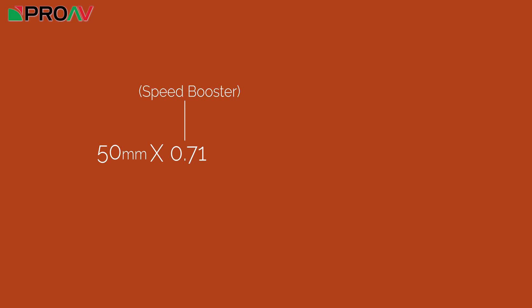For focal length, it makes matters even more confusing. Say we have a full frame Canon lens on a super 35mm FS7 camera, with a 0.71 times speed booster in between the two. We take the 50mm lens, multiply it by 0.71 to get 35.5mm, and then apply the 1.6 times crop factor of the camera to get 56.8mm. That's actually much closer to the field of view the lens would have had on a full frame camera. The disadvantage is of course you have to use full frame lenses if you're using a speed booster.